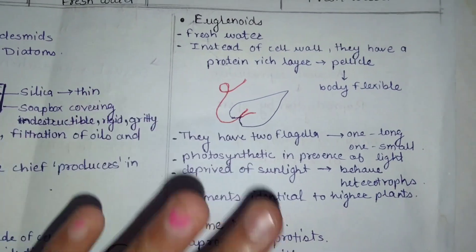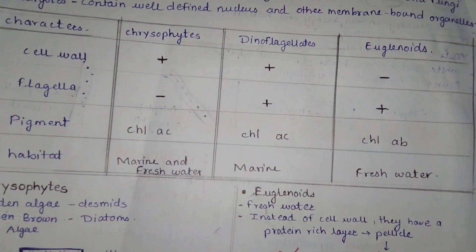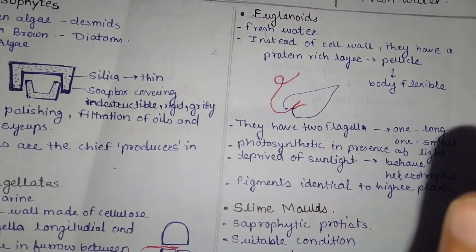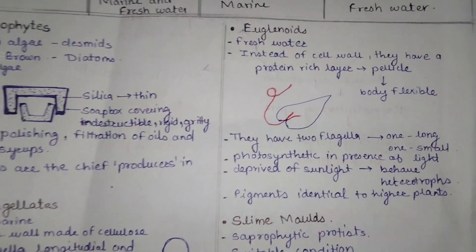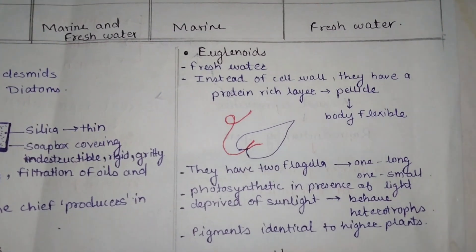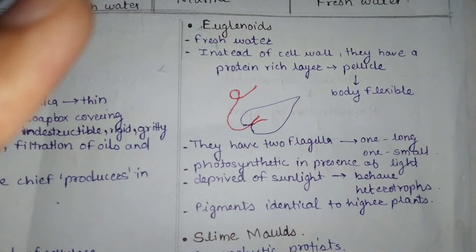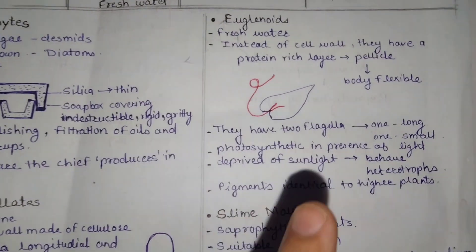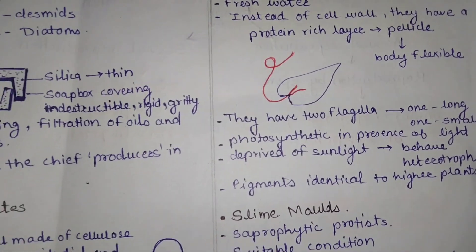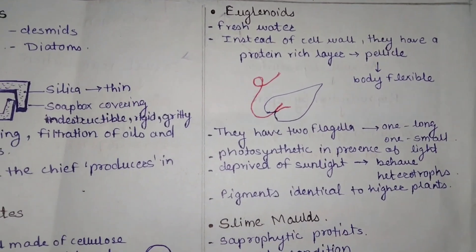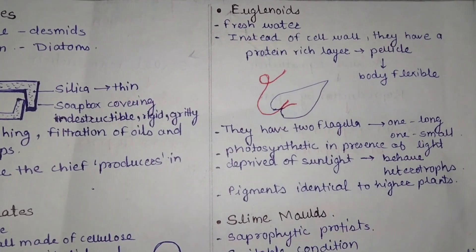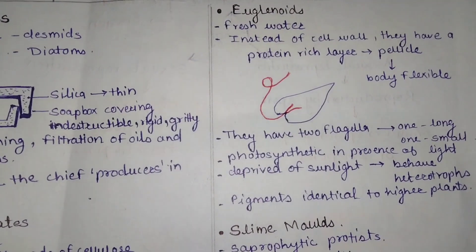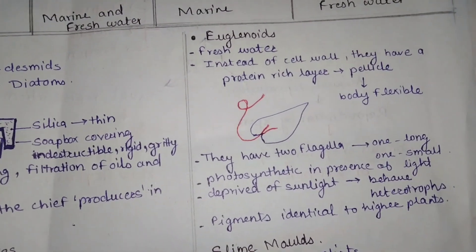Moving forward, we will learn about Euglenoids. Euglenoids live in freshwater. Instead of a cell wall, they have a protein-rich layer called the pellicle, which makes the body flexible. Since there is no rigid cell wall surrounding them, the body is not stiff — it is flexible. The false statement would be that Euglenoids have a stiff cell wall and an inflexible body; in fact, they have a pellicle and a flexible body.